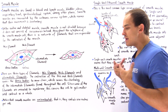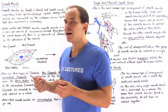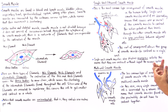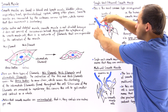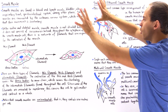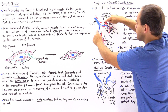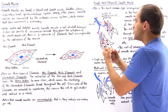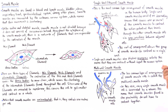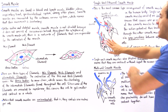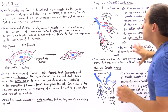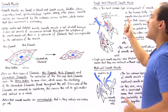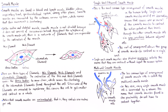As the action potential travels through the axon from the autonomic nervous system, it innervates the directly connected cells, which contract and cause the action potential to spread through the other cells via gap junctions. This means the entire structure contracts as a single unit, which is why these are called single unit smooth muscles.